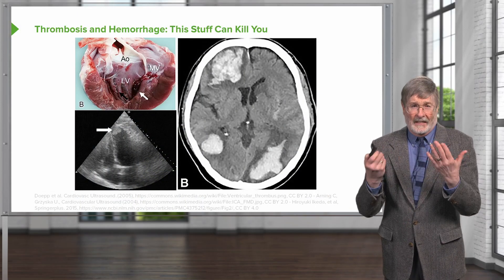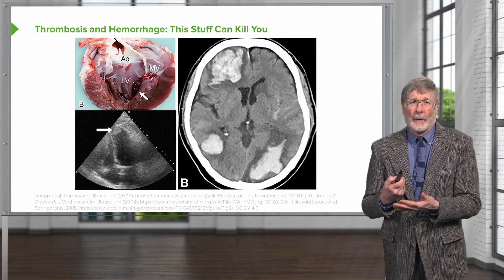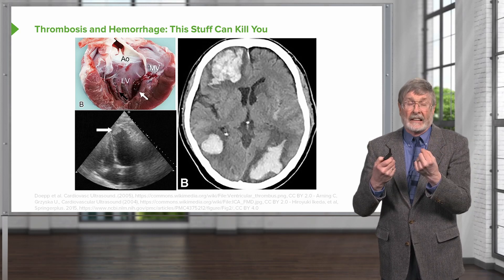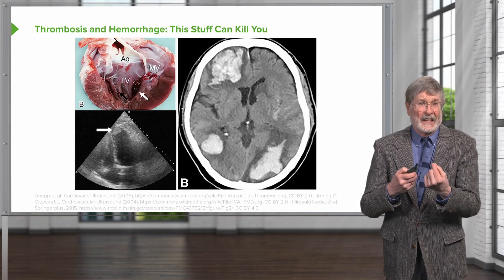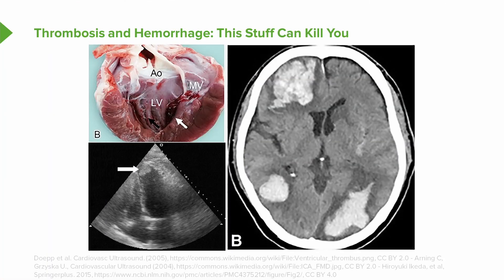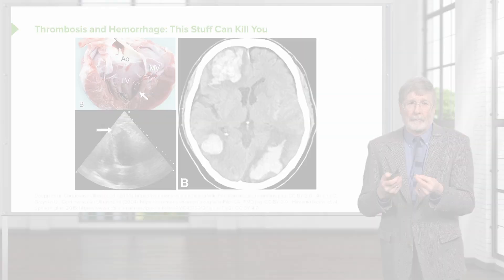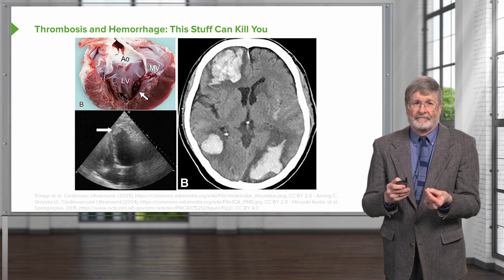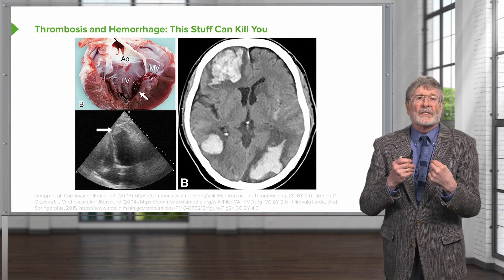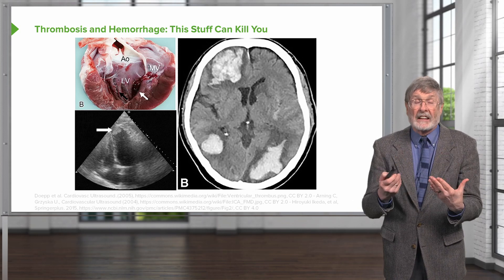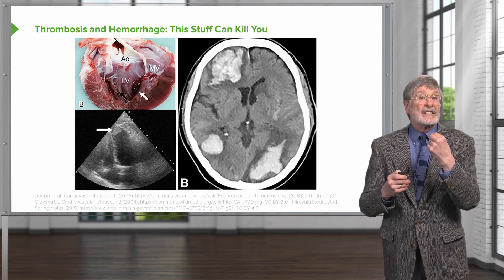What you're seeing on your slide here is the fact that this stuff can kill you. It's not just bleeding that can kill you, but also thrombosis — inappropriate thrombosis. On the left-hand side is a heart that's been opened, and the left ventricle is identified as the LV, with the arrow pointing to a mural thrombus, a blood clot that's in the chamber of the heart. On the echo below that, the arrow is pointing to that thrombus at the apex of the heart. Not only is that thrombus impacting blood flow through that chamber, but it's also a very likely nidus for embolizing — for going someplace else.